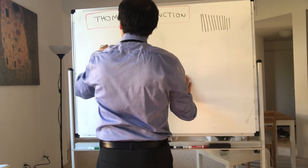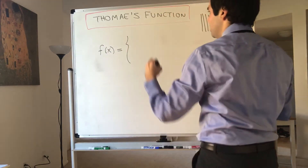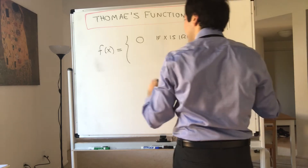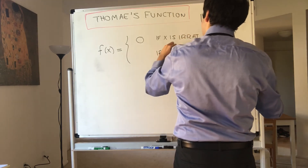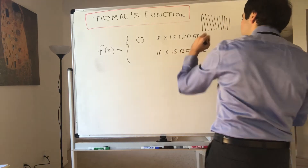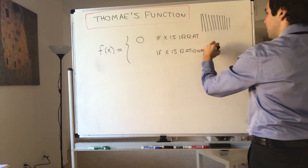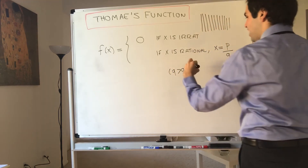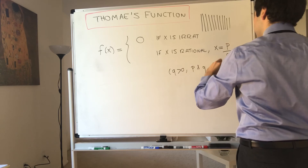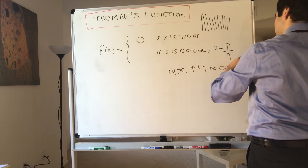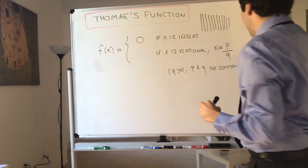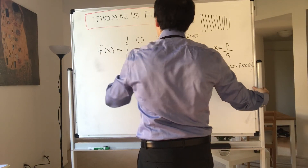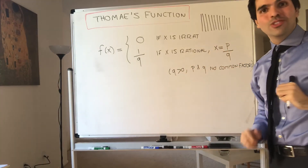Let me write down the formula. So f of x: if x is irrational, it is zero. And if x is rational, then without loss of generality you can write x as p over q, where q is positive and p and q have no common factors. In that case we define f of x to be 1 over q. That is well defined because every fraction has a unique reduced form.